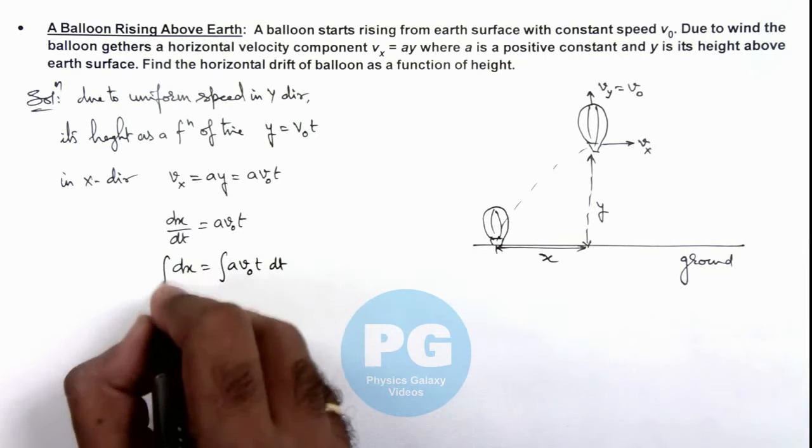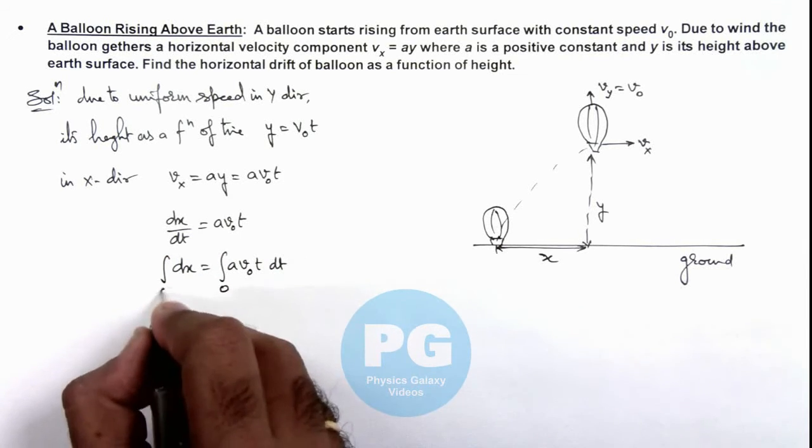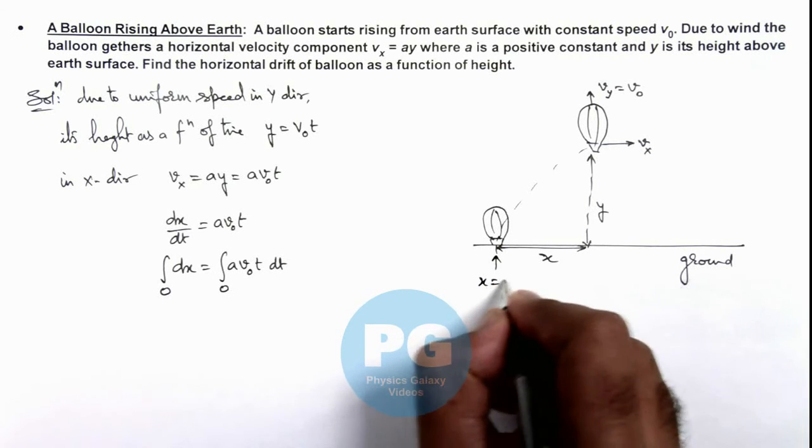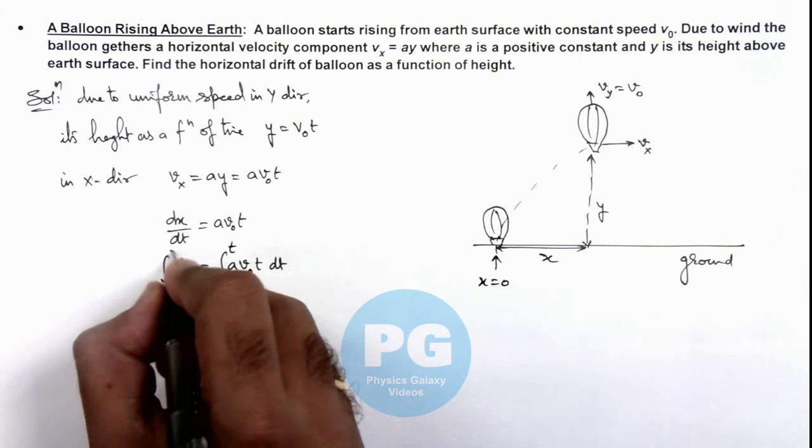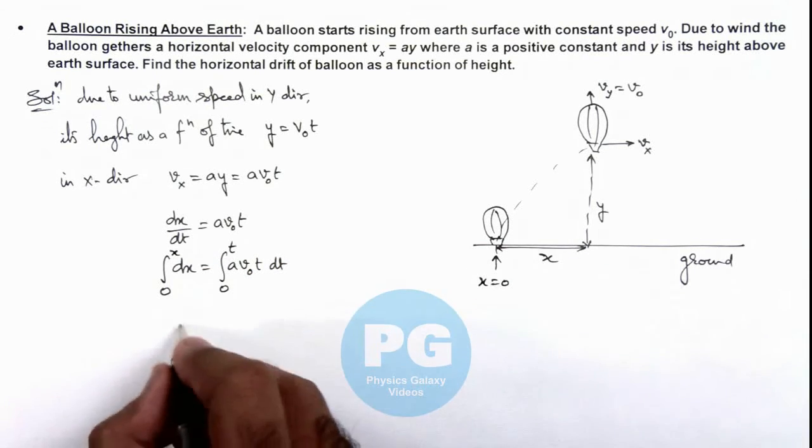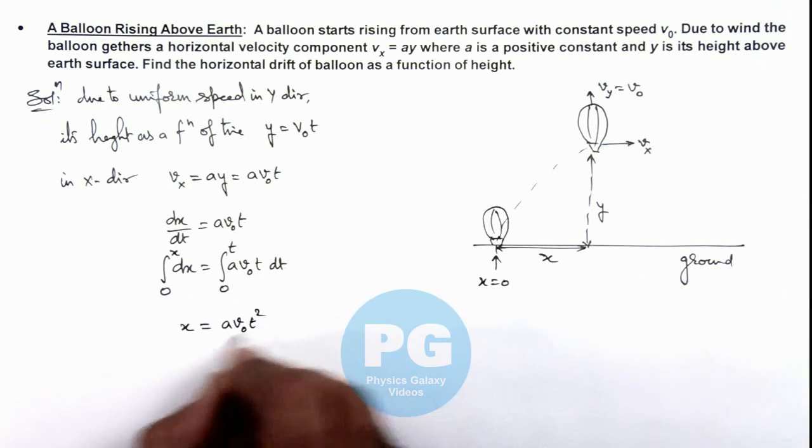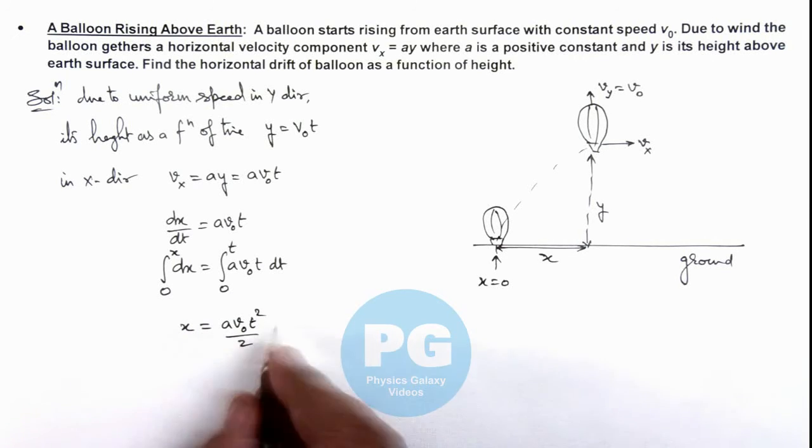If we integrate this expression, with t equal to zero the position was at x equal to zero, this was the position from where the balloon started. And at time t it gathers a horizontal drift x. So here we can write x equals ay*v not*t squared by 2. As the lower limit is zero we can remove the limit substitution and use only the upper limits.